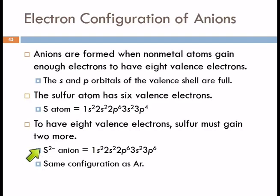And we would say that sulfide and argon are isoelectronic. They have the same number of electrons and those electrons will be arranged in the same way.